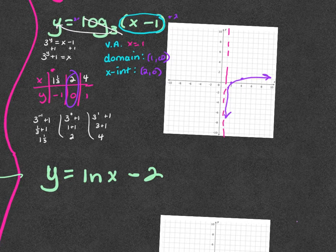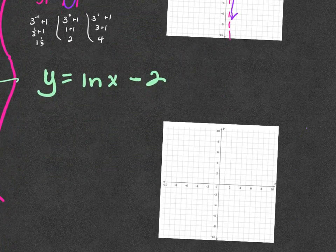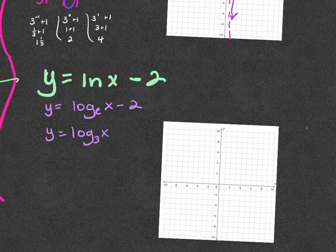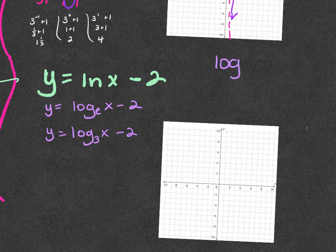Now we've got ln — what is ln the same as? Log base e of x minus 2. Because we're going to graph this, what are we going to approximate that as? Log base 3 of (x minus 2). Log base 10 is just 'log'; if it's ln it's log base e.